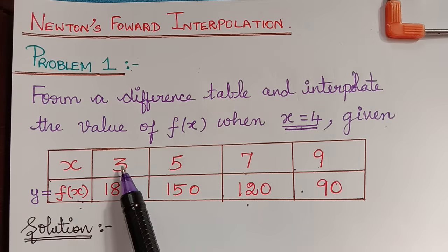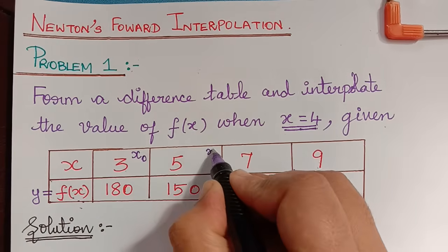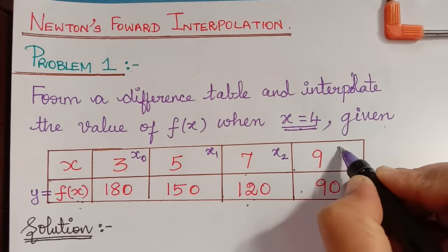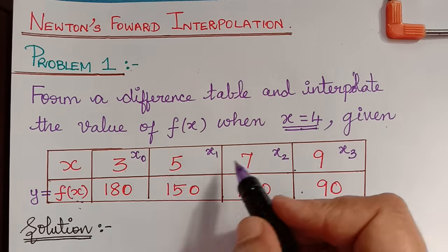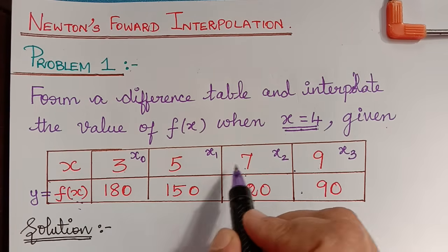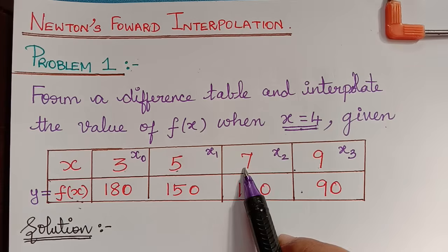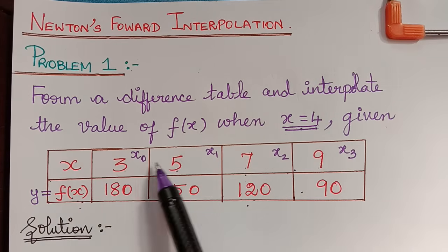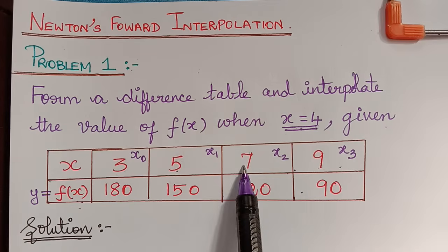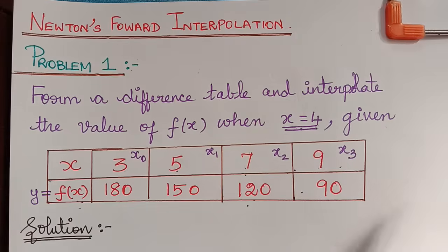Here x0=3, x1=5, x2=7, x3=9. x1 minus x0 is 5 minus 3, difference is 2. x2 minus x1 is 7 minus 5, difference is 2. x3 minus x2 is 9 minus 7, again difference is 2. So the values are placed in equal intervals with a distance of 2, and for equal intervals we use either Newton's forward or backward formula. If it were unequal intervals we would use Lagrange's method.